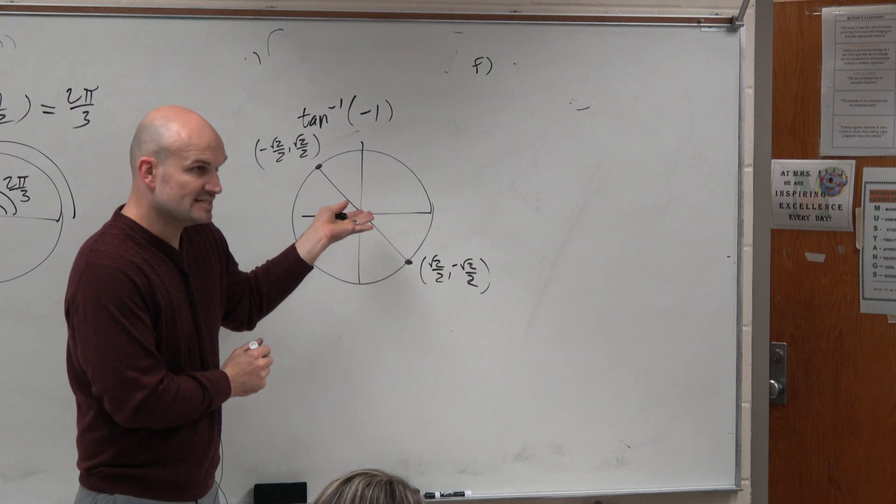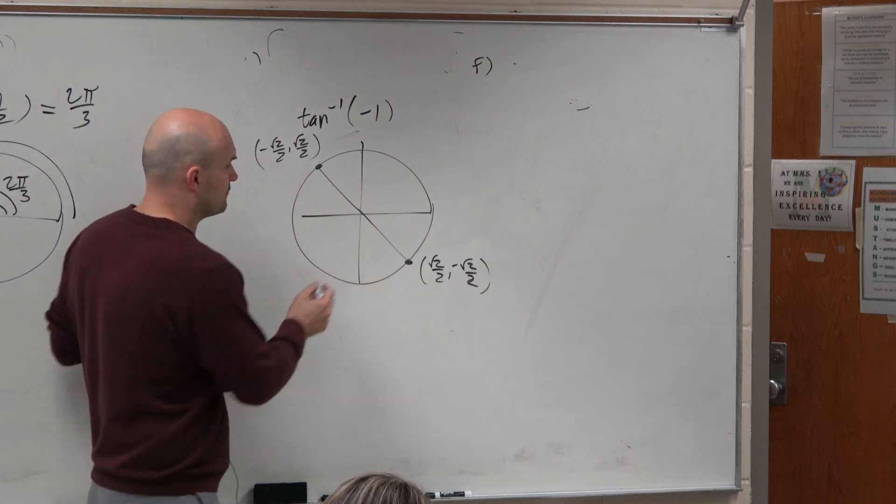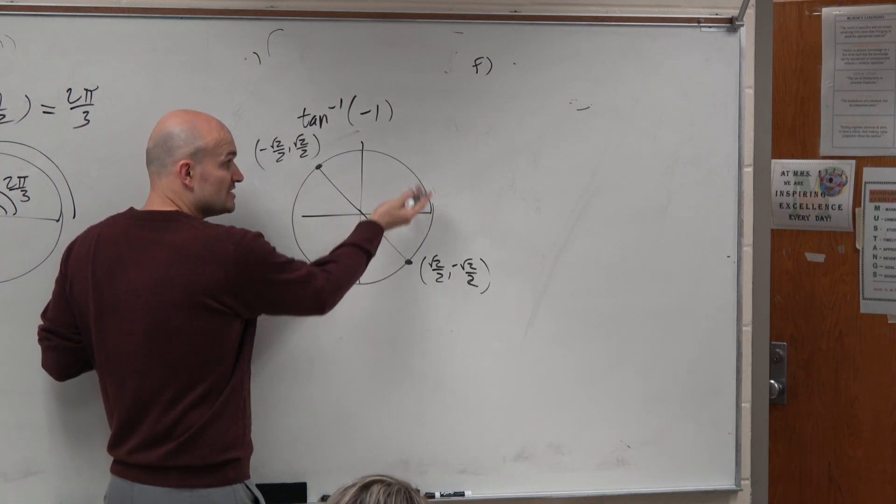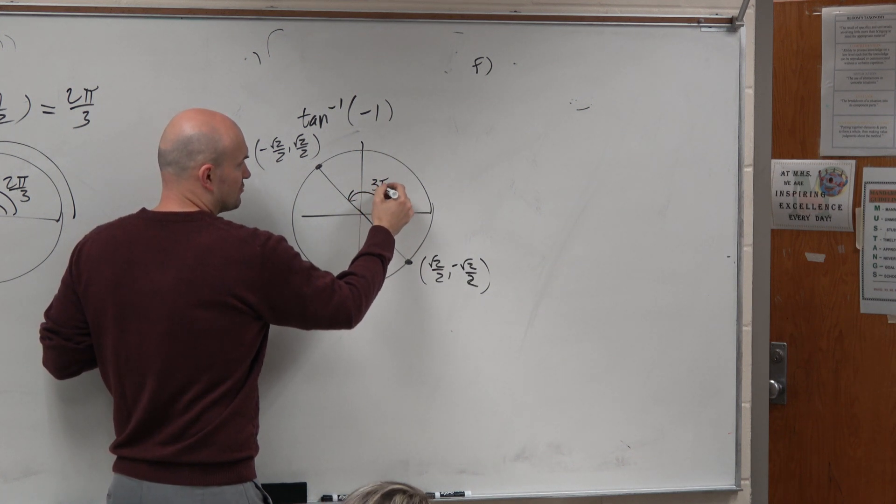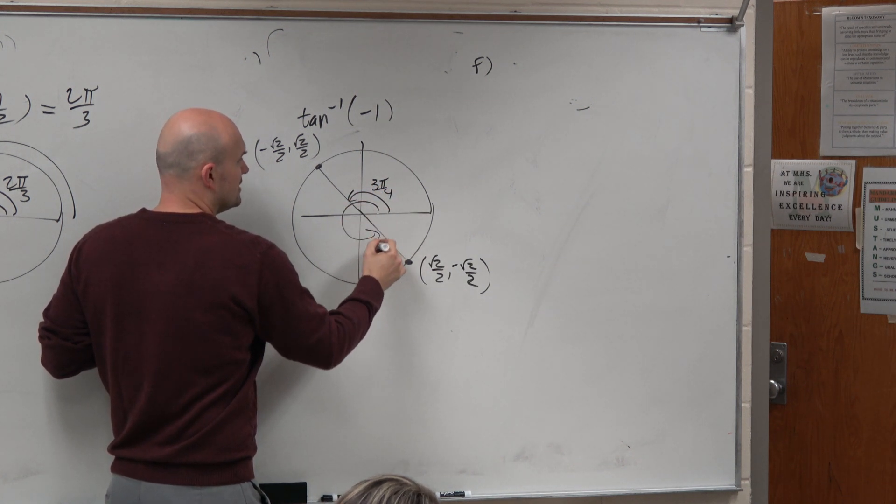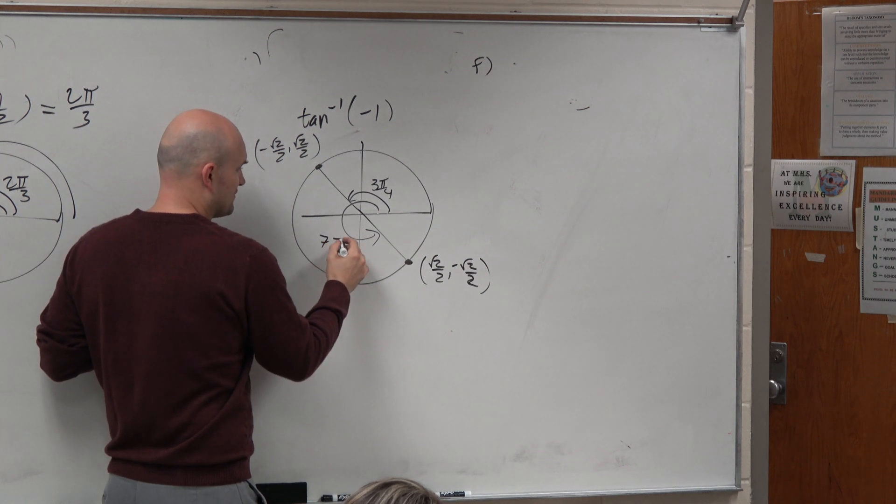Now, we've got to know, well, what are these? Like, what is the referencing, or what are these angles? Hopefully, you guys recognize from your knowledge of the unit circle, this angle is 3 pi over 4. This angle is 7 pi over 4.